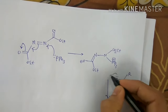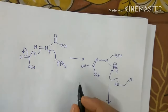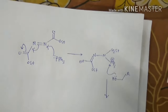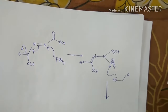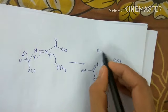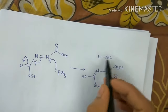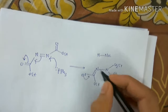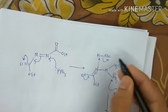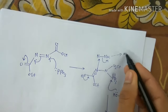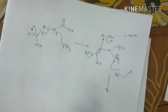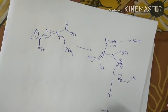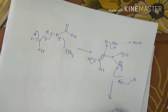Now we can represent it like this. What will occur next? We have alcohols here, and the lone pair on the alcohol oxygen can attack here. At the same time — or we can show it in different steps — there are weak nucleophiles like HNU. By pushing the lone pair, it can abstract a proton from here.